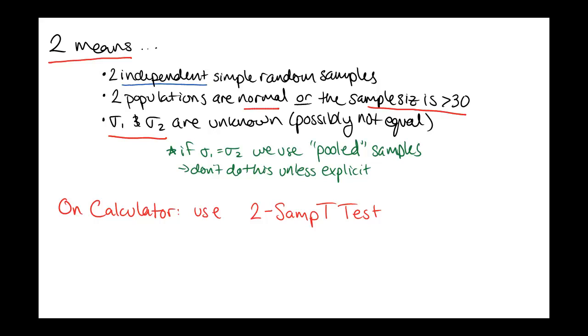I put a little note in here. If for whatever reason we know that the two population standard deviations are the same, that they're equal, then we can use what are called pooled samples. Your book goes into a little more detail about this. When we look at the calculator test, you'll see where that pooled option is. You don't want to do this unless it explicitly says in the problem that we're going to assume that the population standard deviations are the same. If not, we'll just say maybe they're not the same, maybe they are, we don't know, and continue assuming that they might not be. On the calculator, we're going to be using this test called two-sample t-test.